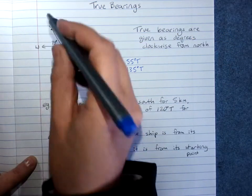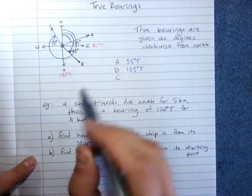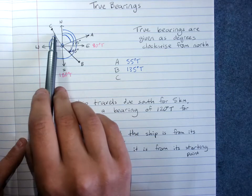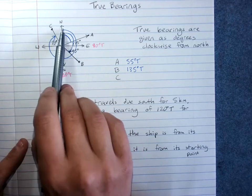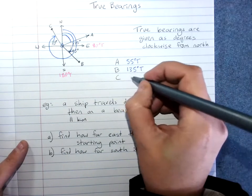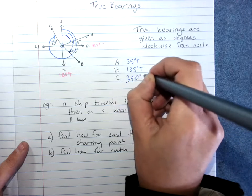C, my angle is all the way around to there from north. So that's either 270 plus 70 or 360 minus 20. 360 minus 20 is easier, so that's 340 degrees true.